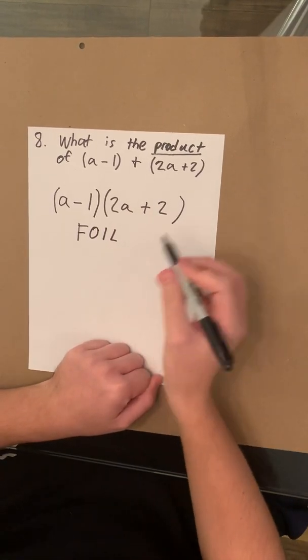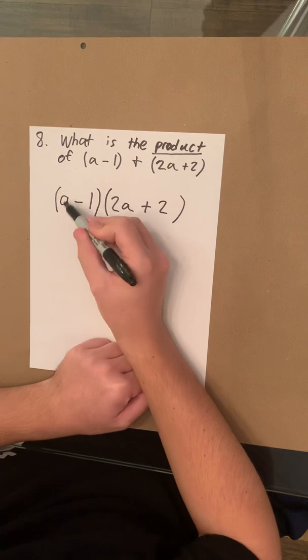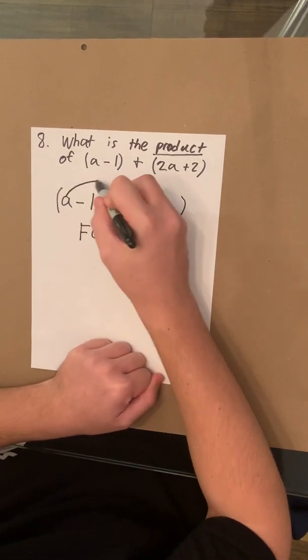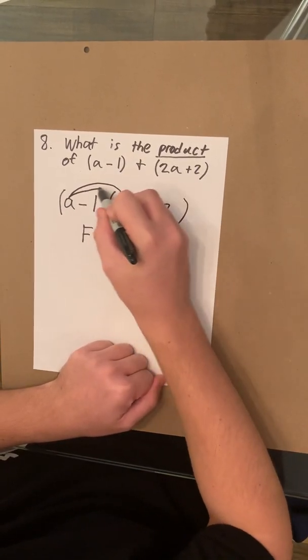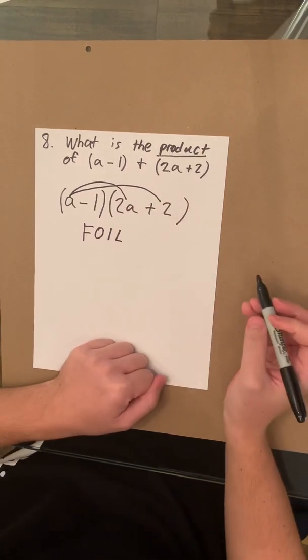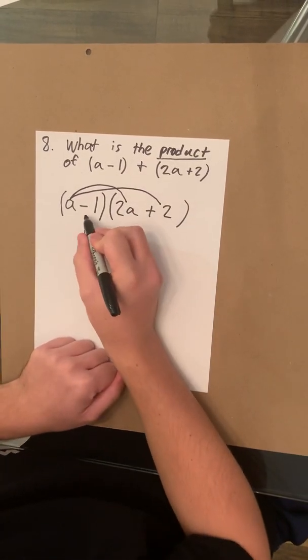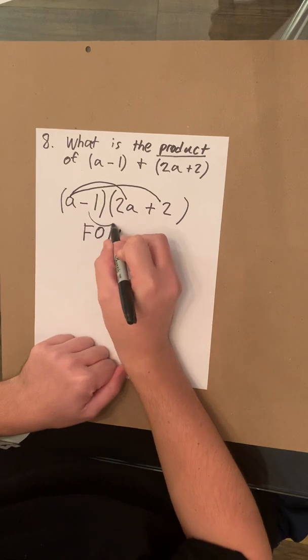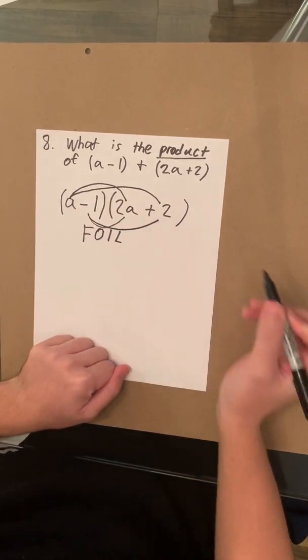And how we do that is you take the first number of the first parentheses and you multiply it by the first number and the last number. And then you're going to take the second number and you're going to multiply it by the first number and the last number.